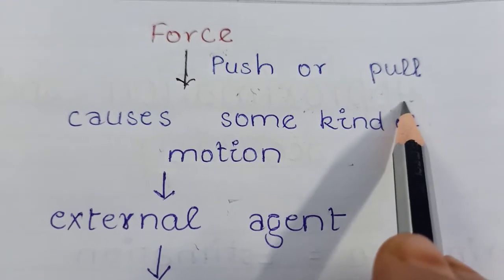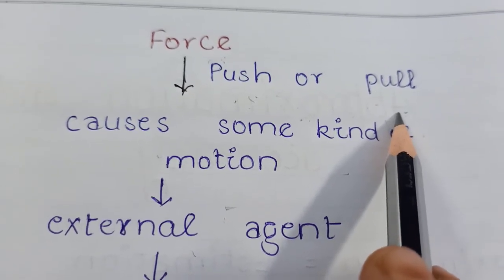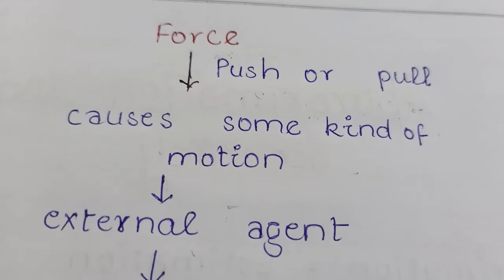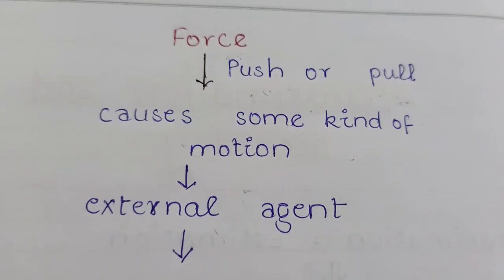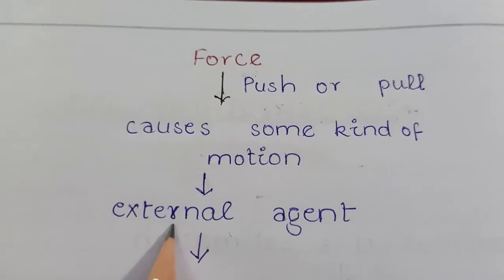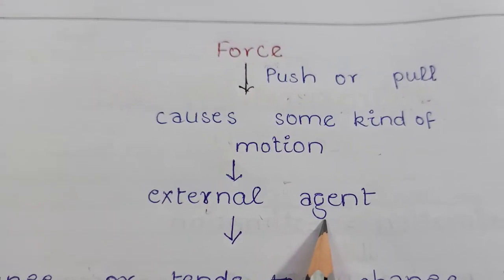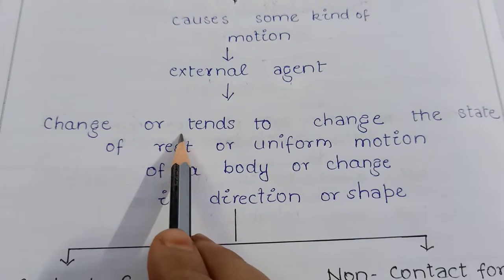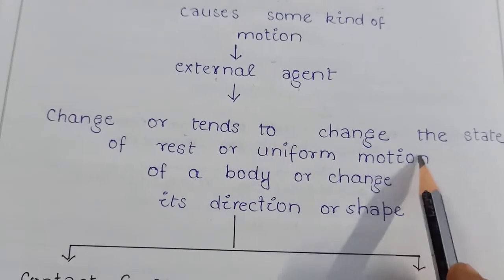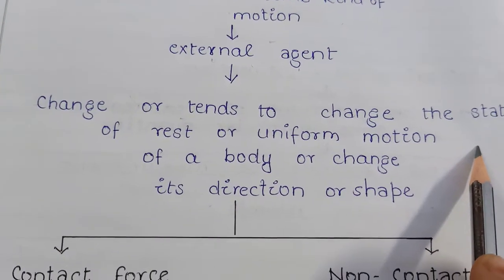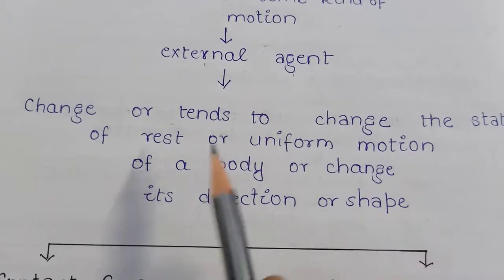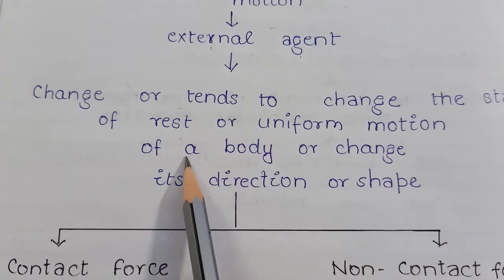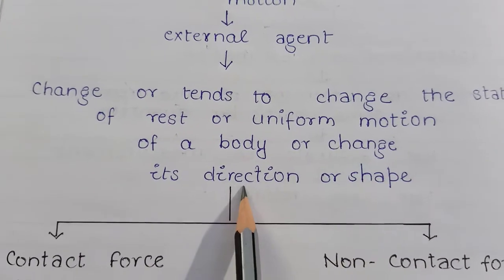For example, a force can make a moving object move faster. In another way, we can say that force is an external agent which changes or tends to change the state of rest or uniform motion of a body, or changes its direction or shape.